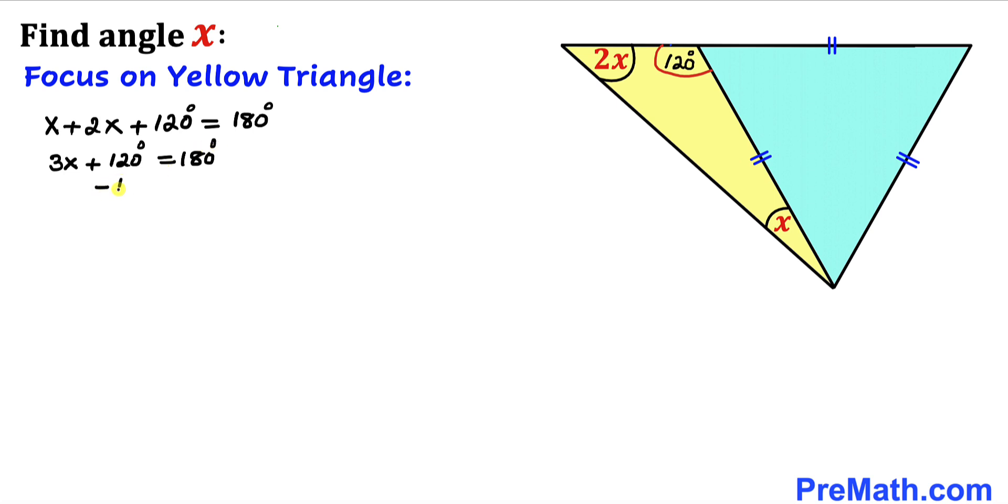Let me go ahead and subtract 120 degrees from both sides and this cancels out so we ended up with 3x equal to 60 degrees. Let's divide both sides by 3 to isolate x, so x value turns out to be 20 degrees.